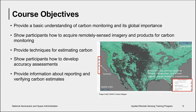The main objectives for this course are to provide an understanding of carbon monitoring and its global importance, show participants how to use remote sensing for forest monitoring, provide techniques for estimating carbon, provide information on how to conduct accuracy assessments, and finally to provide information about reporting and verifying carbon estimates.